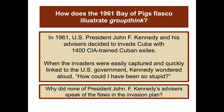One of the most famous examples of groupthink was the 1961 Bay of Pigs fiasco. President John F. Kennedy and his advisors decided to invade Cuba with 1,400 CIA-trained Cuban exiles. When the invaders were easily captured and quickly linked to the U.S. government, Kennedy wondered out loud, 'How could I have been so stupid?' Why did none of his advisors speak of the flaws in the invasion plan?